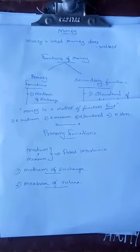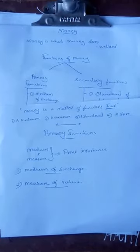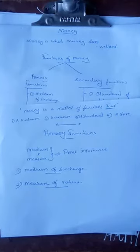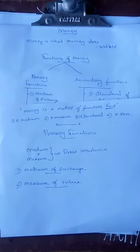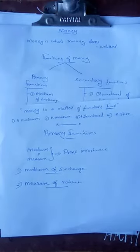Second function is measure of value. Money serves as a unit of account. We can express the value of a commodity in terms of money. It is called price. By knowing the prices of various commodities, it is easy to calculate exchange ratios between them.